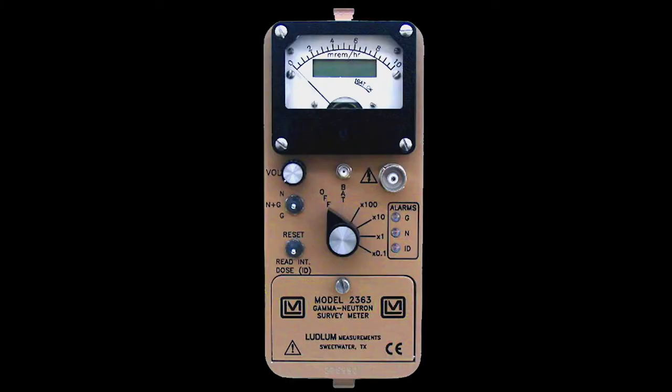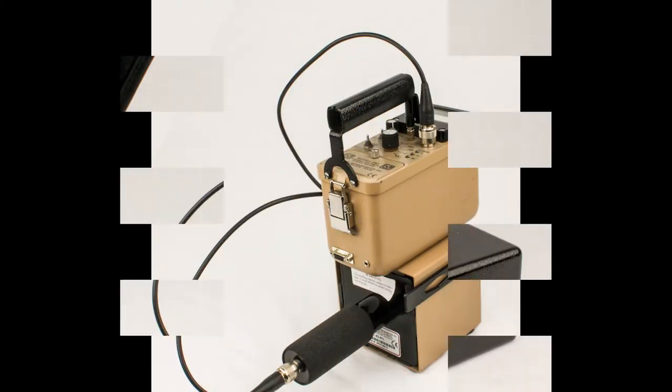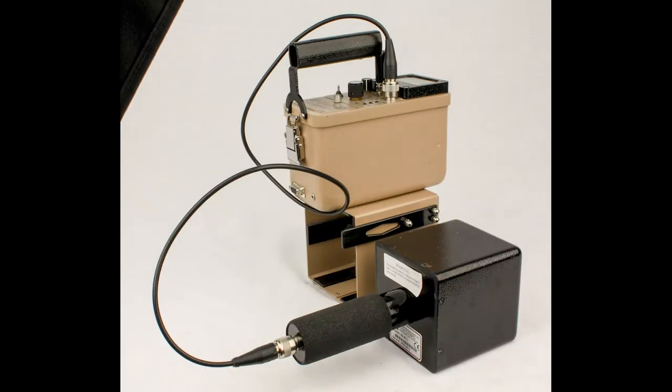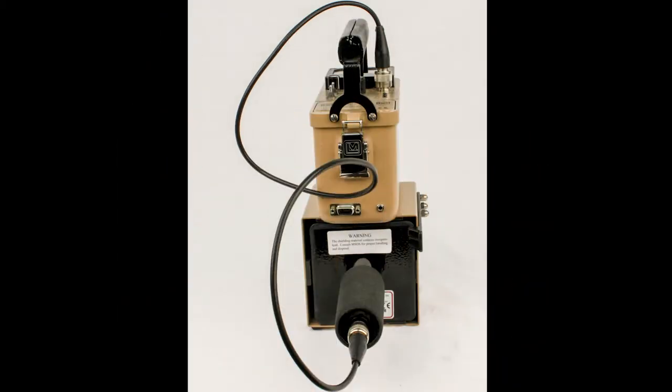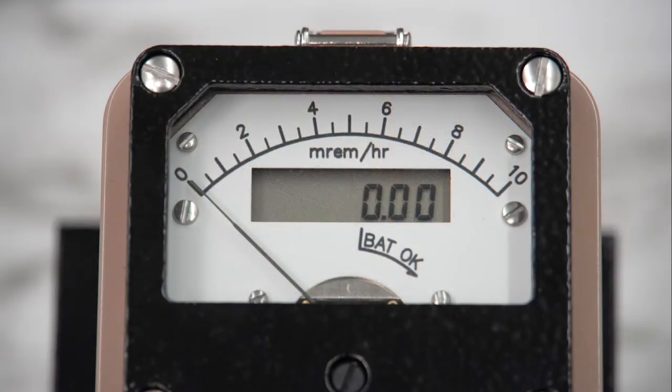The Ludlam Model 2363 Gamma Neutron Survey Meter is an easy-to-use survey instrument capable of measuring both neutron and gamma radiation levels simultaneously, incorporating both analog and digital displays for maximum versatility.